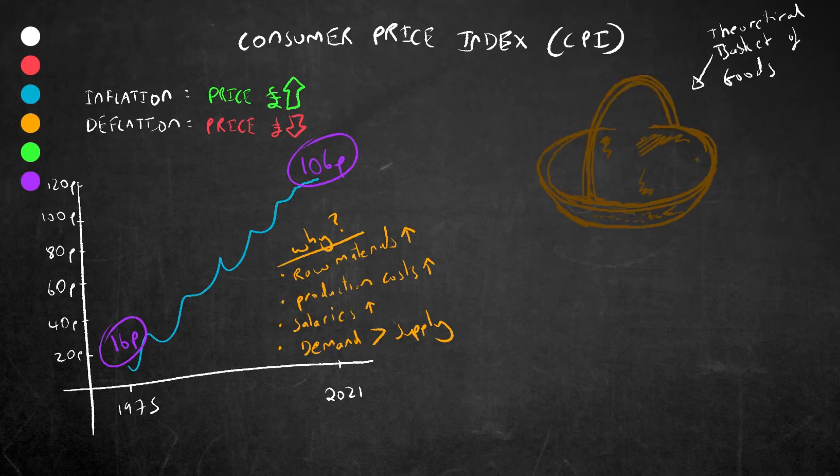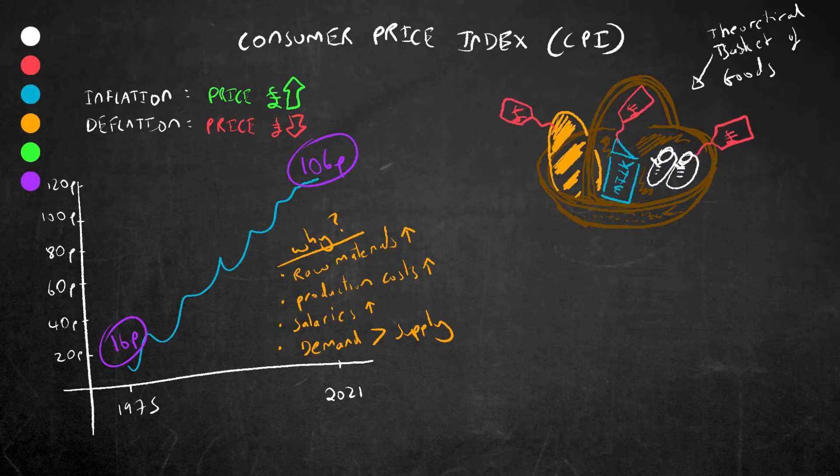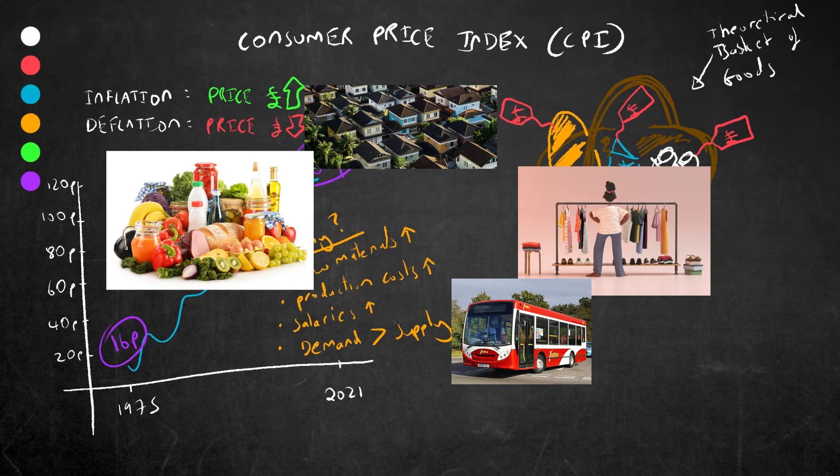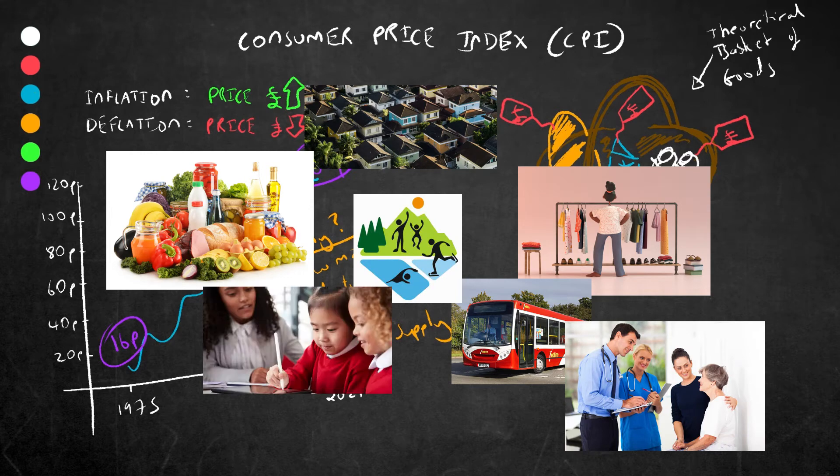CPI is a theoretical basket of everyday goods, each with an average price tag. Now there are hundreds of everyday goods and services that are tracked and they are split into eight categories, namely housing, clothing, transport, food and drink, medical care, recreation, education and other.